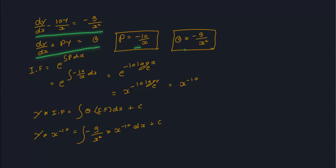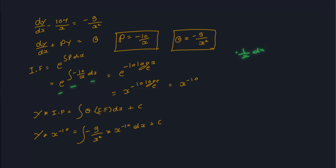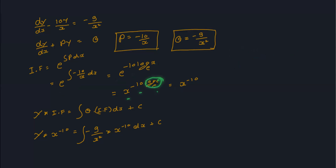Standard ODE dy/dx + Py = Q के case में, integrating factor = e^(∫P dx). P = −10/x है, तो integrating factor = e^(∫−10/x dx) = e^(−10 ln x) = x^(−10), क्योंकि log_e(e) = 1. So integrating factor = x^(−10).